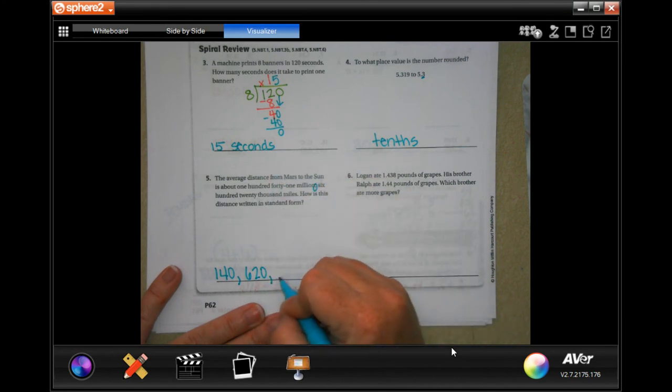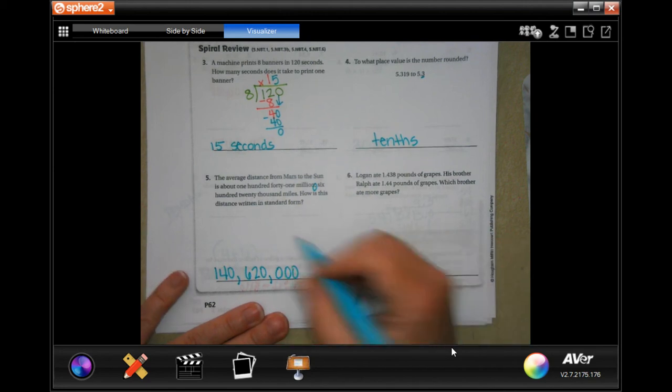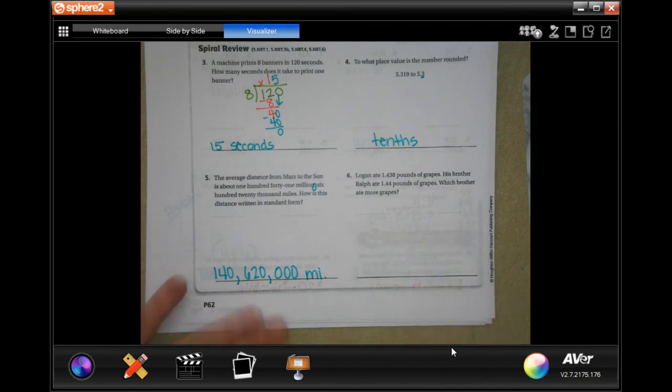141,620,000. And because it doesn't have a hundreds, a tens, or a ones, we're going to fill those in with zeros.